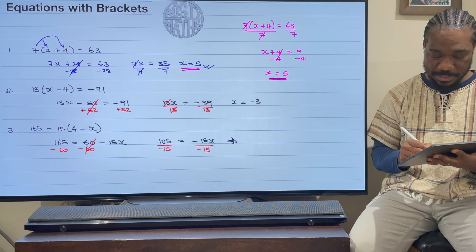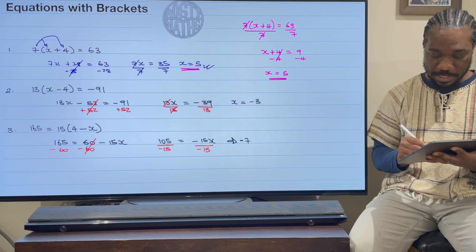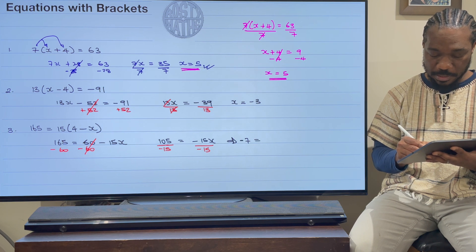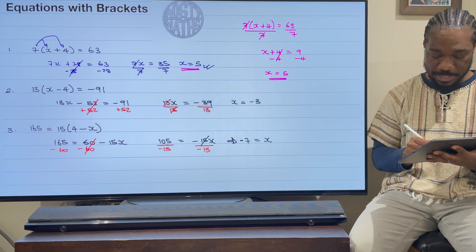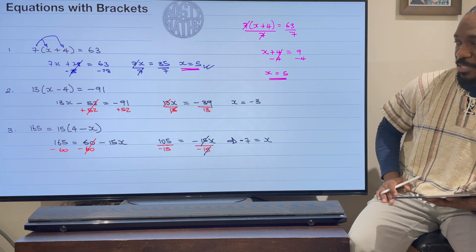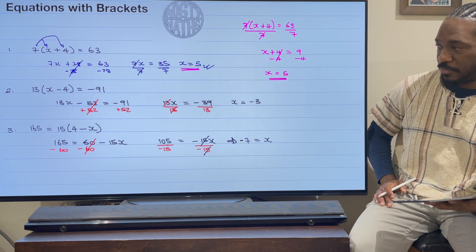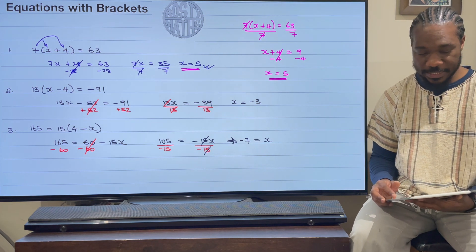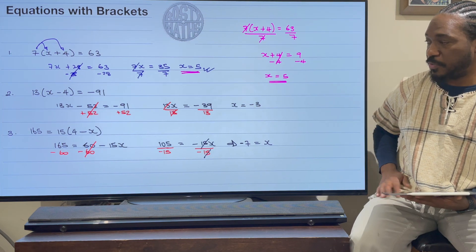And once I have done that, that's going to mean that, well, 105 divided by 15 is going to be -7, and that's equal to x, because the x's will cancel, the 15s will cancel out there. And that's the end of that.